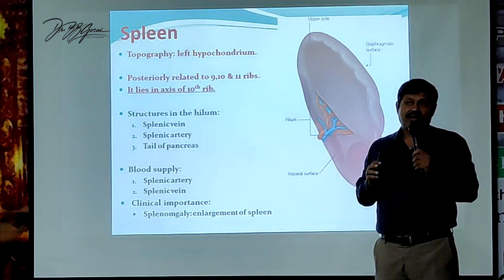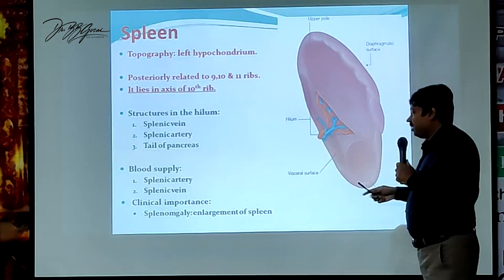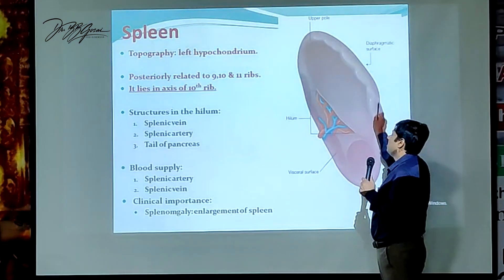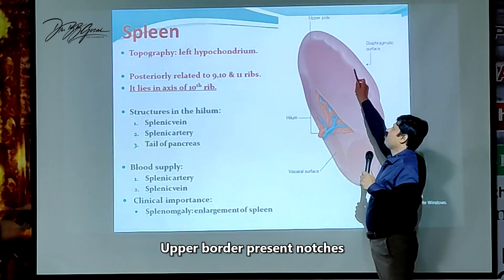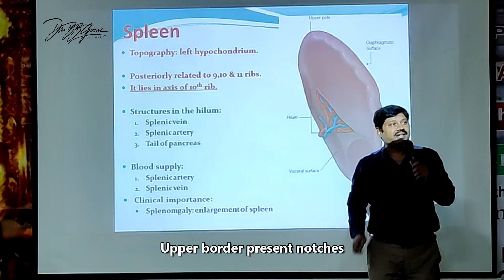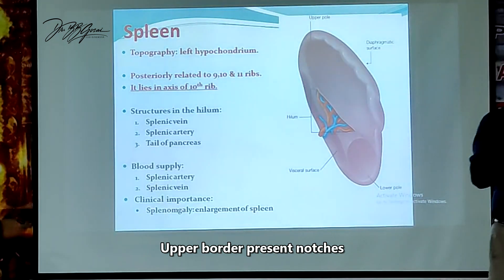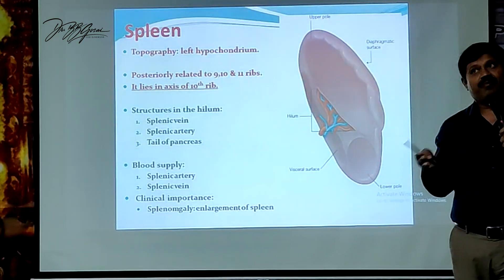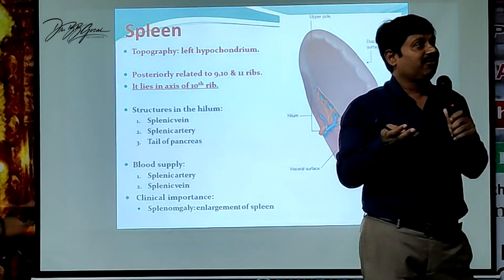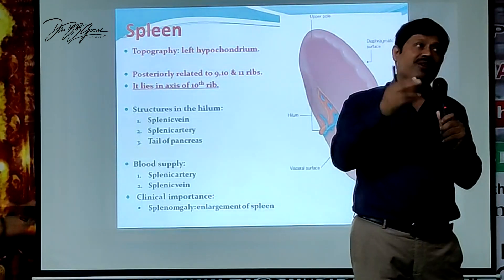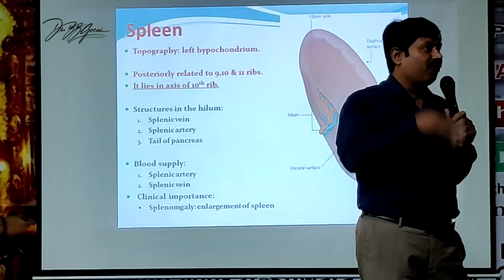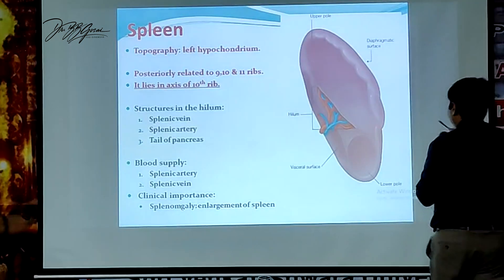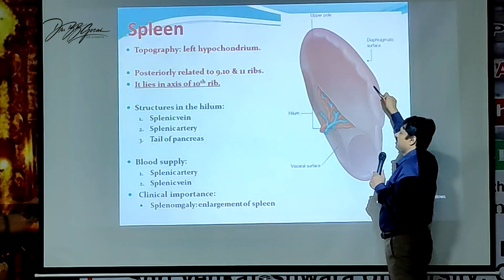So ultimately, there are three important organs related to the visceral surface. Now if you look at the superior border, you will find this type of notch. The splenic notch is a characteristic feature of the superior border. The outer surface is easy to see because it is related to the ribs, and the inner surface is located because of the hilum.